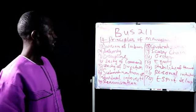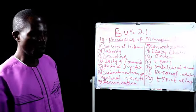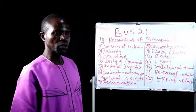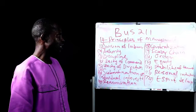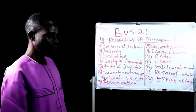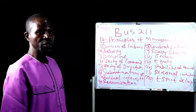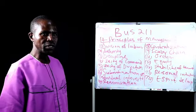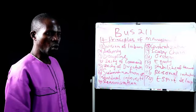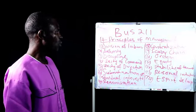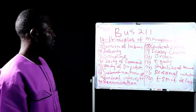Then we have the Scalar Chain, which talks about the order and positions of individuals working in the organization. For example, Mr. A is responsible to Mr. B, Mr. B is responsible to Mr. C, and Mr. D is responsible to Mr. E. The arrangement of authority and positions in the organization is what is referred to as the Scalar Chain.